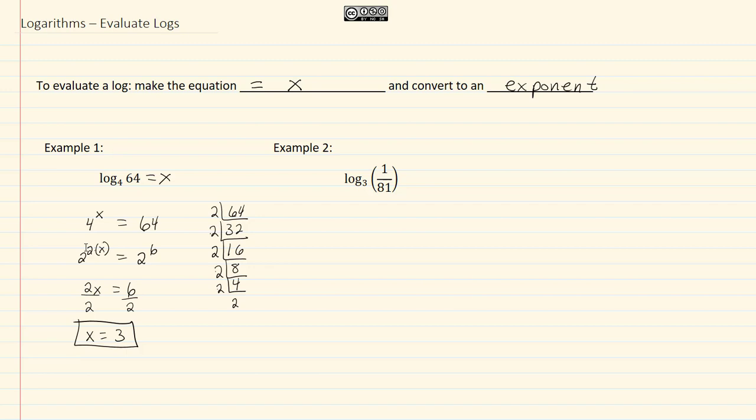In example two, when we evaluate this, again I want to make this equal to x. So putting it in exponential form, we're going to have three to the x equal to one over eighty-one. Let's go ahead and bring that eighty-one up, so we have three to the x equal to eighty-one to the negative one power.